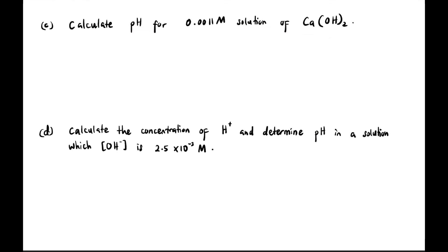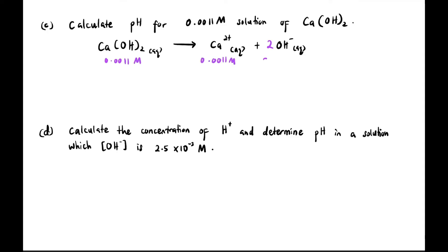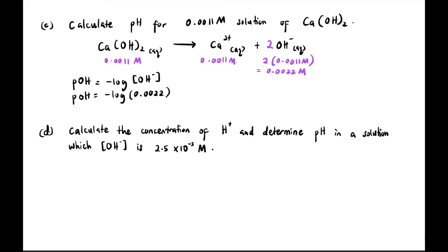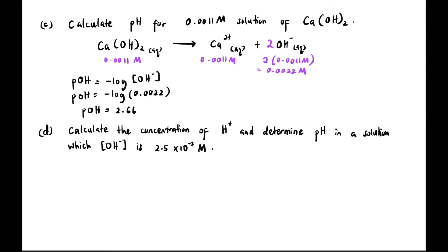Next: Calculate the pH of 0.0011 M calcium hydroxide, Ca(OH)₂. Balancing the equation gives 2 OH⁻. So [OH⁻] = 2 × 0.0011 = 0.0022 M because there are 2 moles of OH⁻. pOH = -log(0.0022) = 2.66. Then pH = 14 - 2.66 = 11.34.